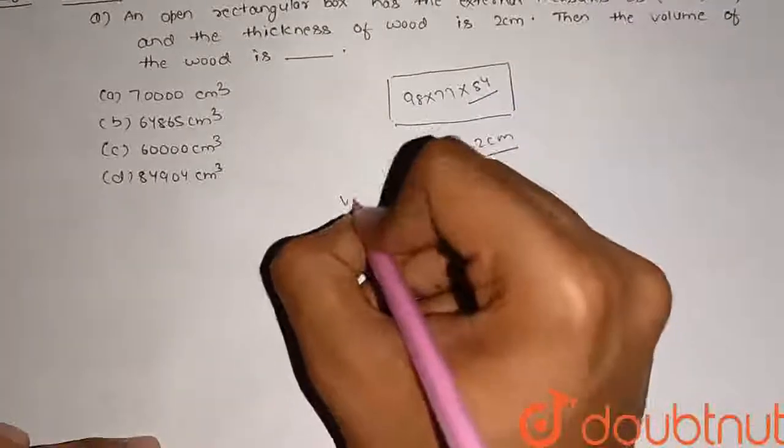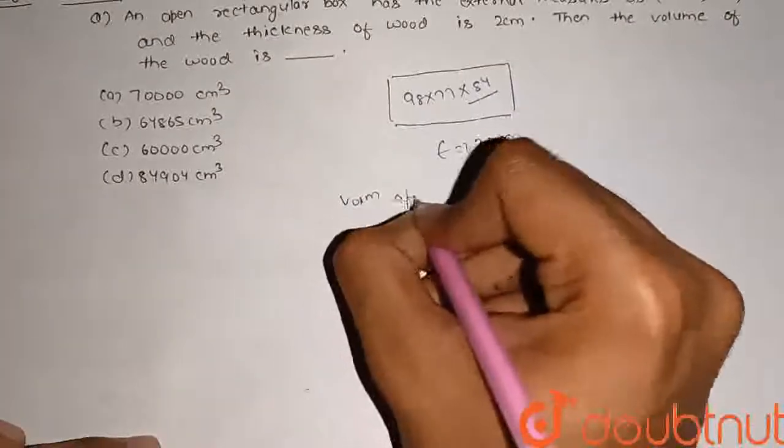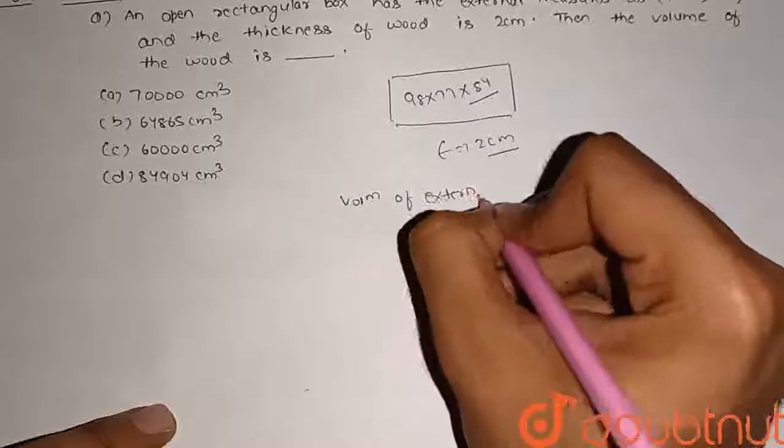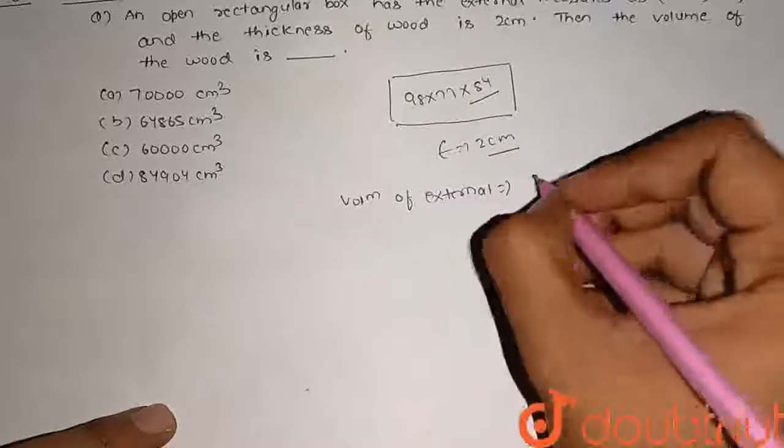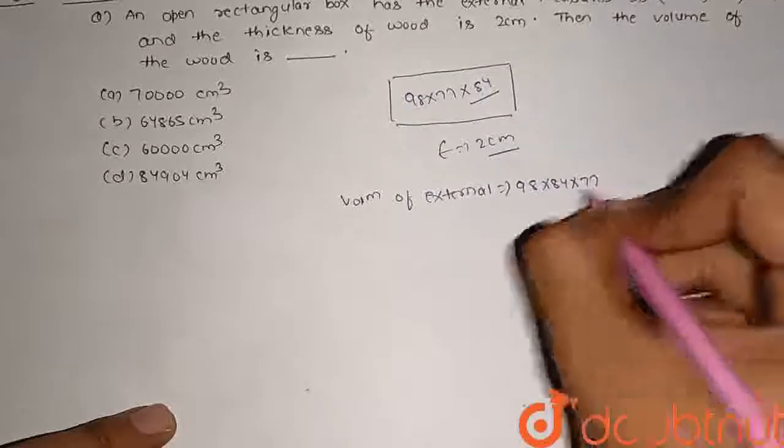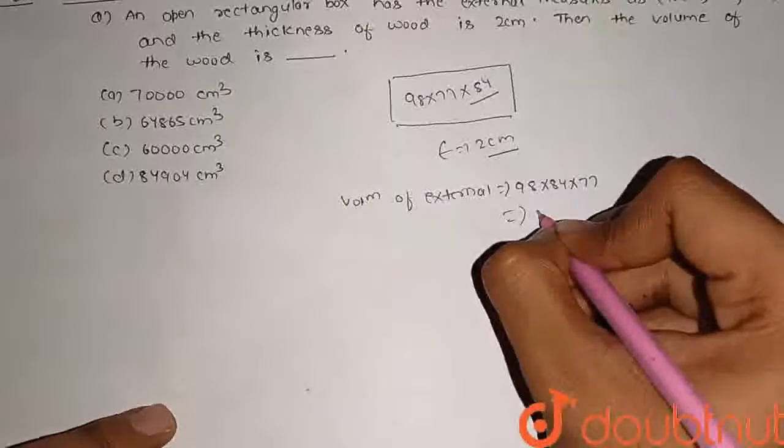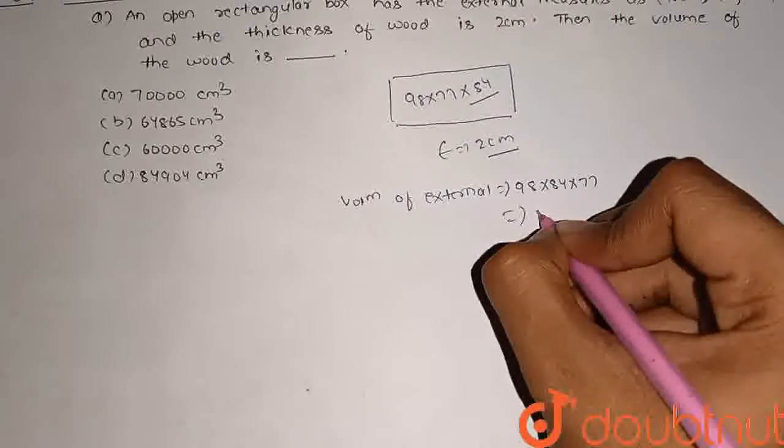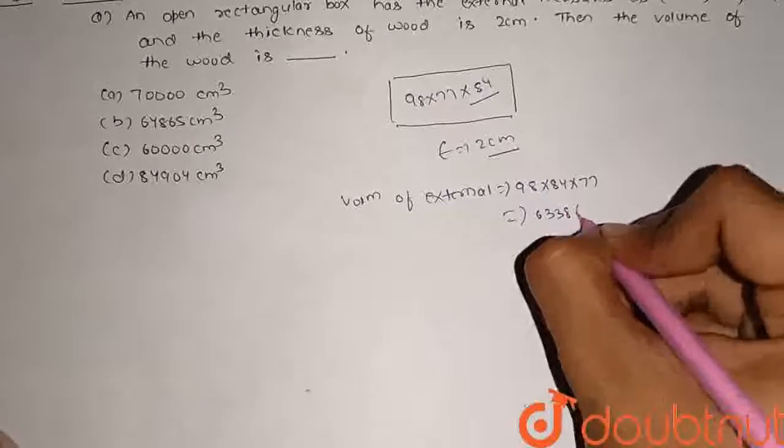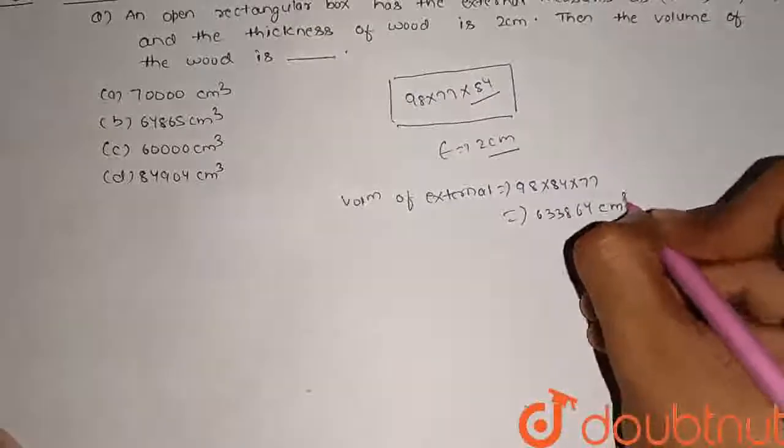First, volume of the box external: 98 into 84 into 77. Multiply: 633,864 cm³.